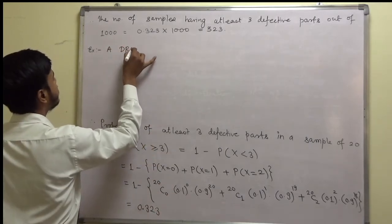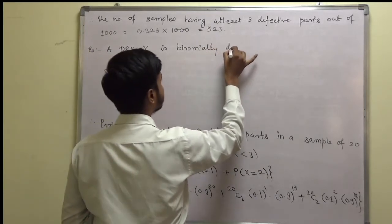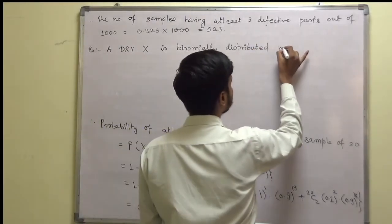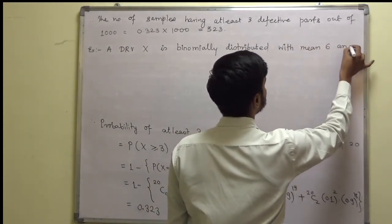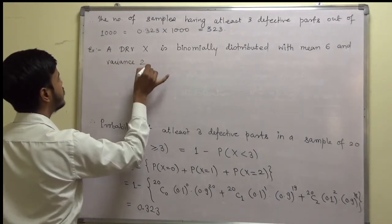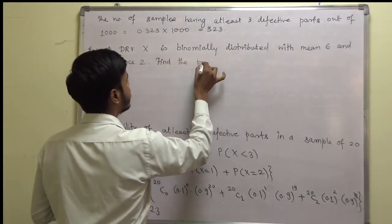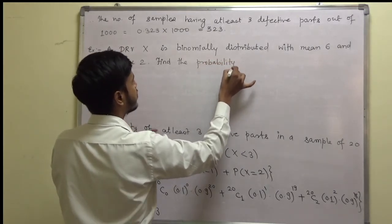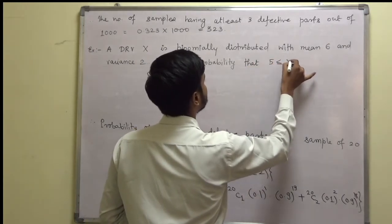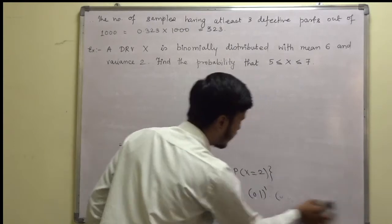A discrete random variable x is binomially distributed with mean 6 and variance 2. Find the probability that 5 less than or equal to x less than or equal to 7. To solve such type of problem, first of all you must know the properties of binomial distribution.